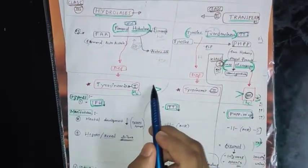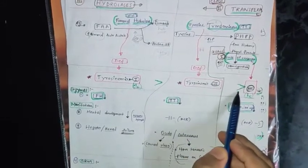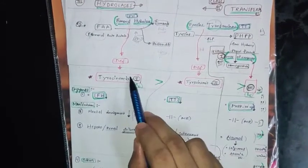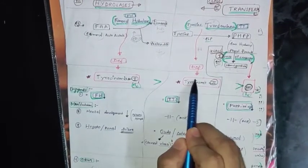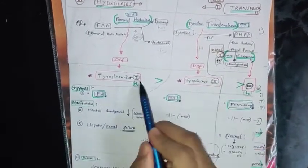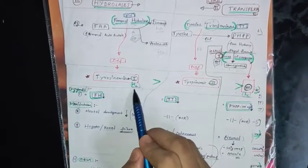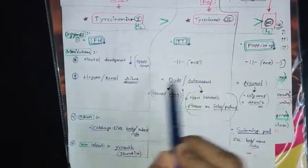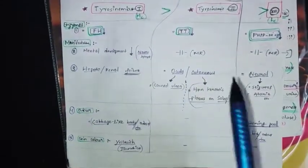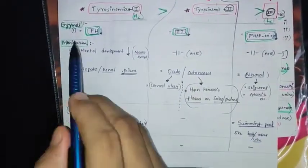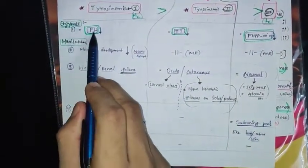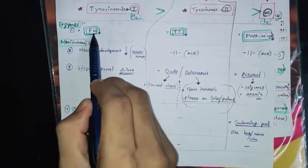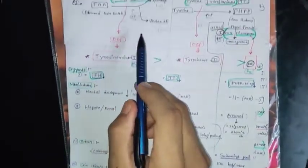Tyrosinemia type 1 is the most common (MC), type 2 is the second most common, and type 3 is the least common (LC). Now for the differences between these three: the enzymes are — fumarylacetoacetate hydrolase (FAH) deficient in type 1, tyrosine transaminase (TT) deficient in type 2, and PHPP dioxidase deficient in type 3.